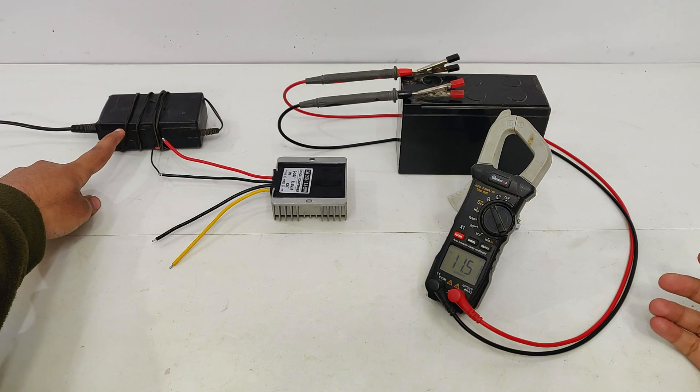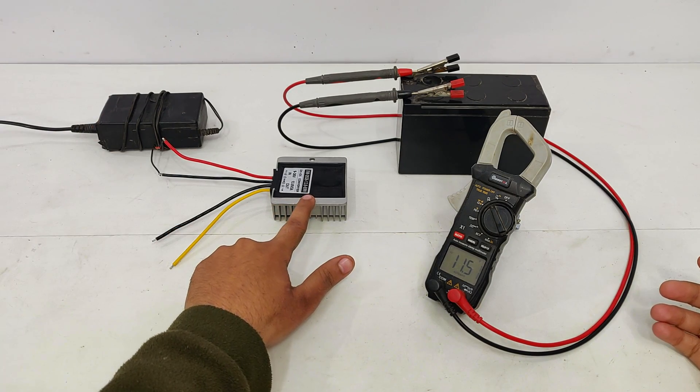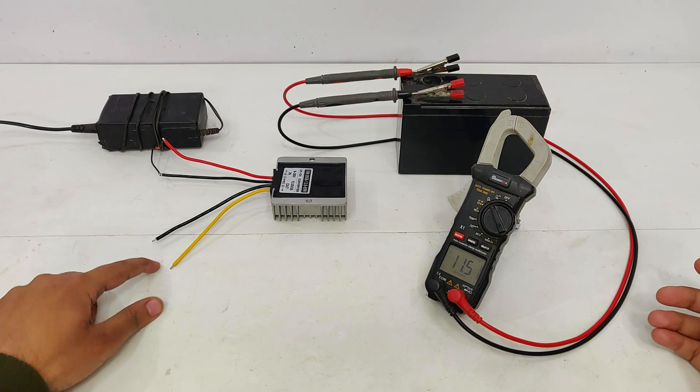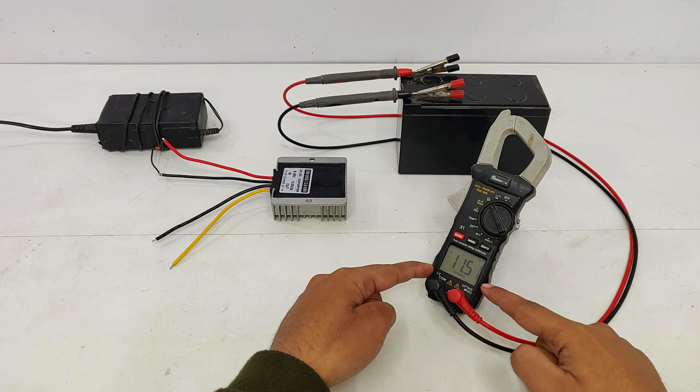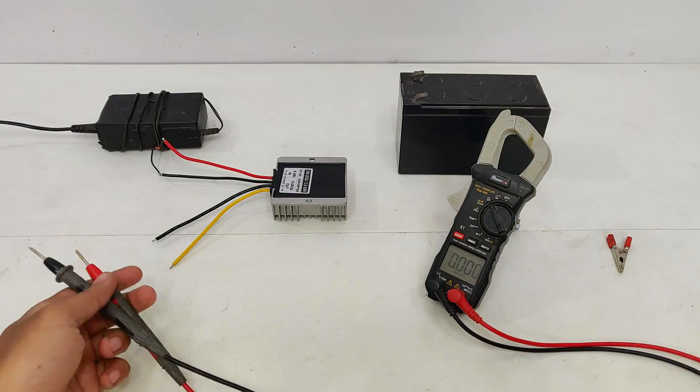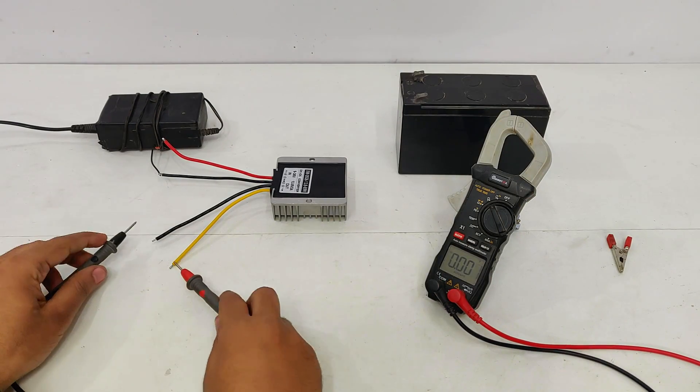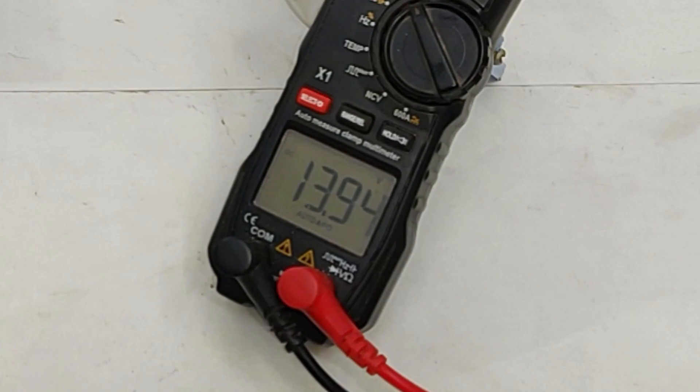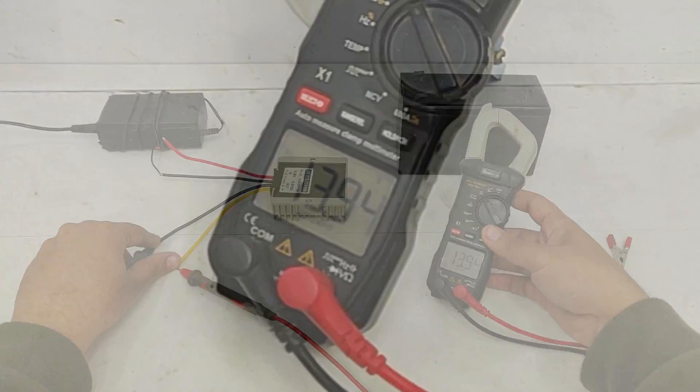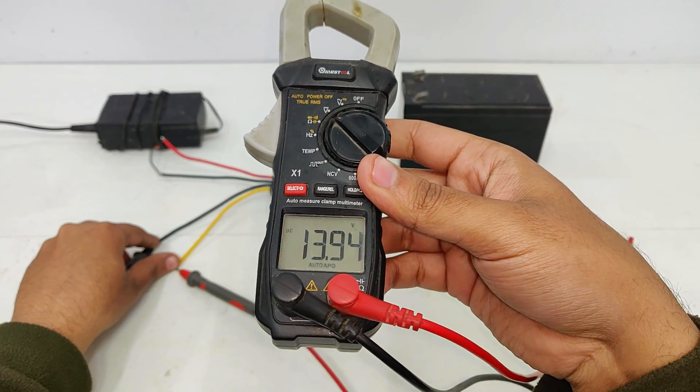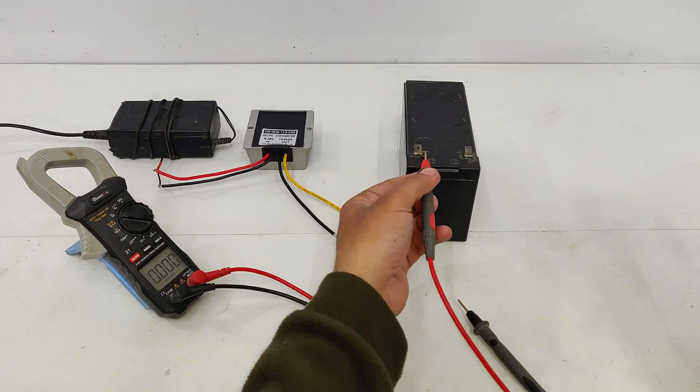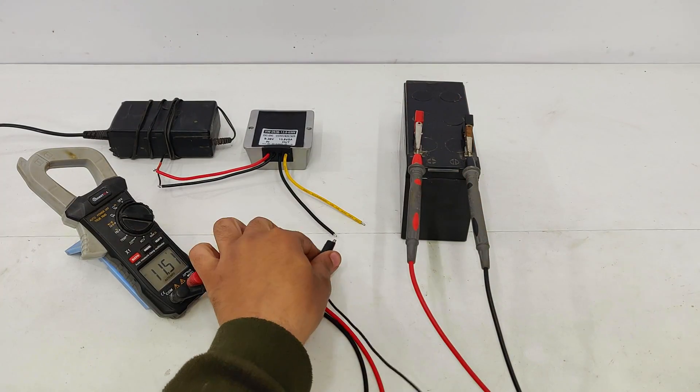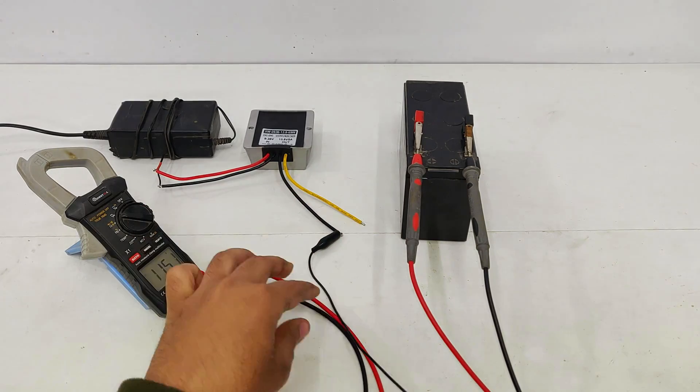The outputs are not yet connected. Battery voltage is 11.5 volts DC. Let's first measure the output from the DC converter. Here we have 13.94 volts, which is very good, better than I expected. Now I'm going to connect the converter to the battery.